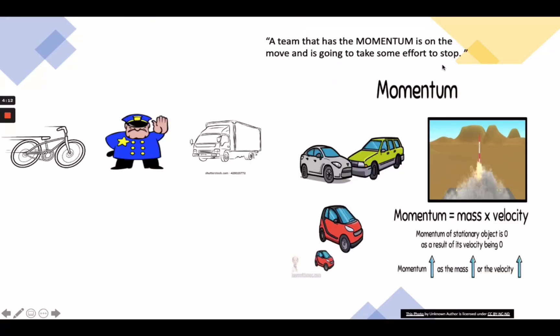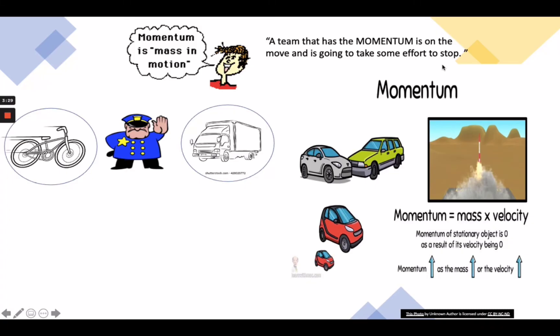We might hear a sports analyst talking about momentum, which depends on how massive the object is and how fast it's moving. Let's look at this scenario: a traffic enforcer is trying to stop a bicycle and a truck. Which do you think will have a greater momentum? That's right. The bus has greater momentum given its mass. Let us focus on linear momentum, which is simply defined as momentum in a straight line.